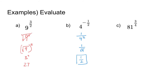What about 81 to the 3 fourths power? This would be the fourth root of 81, and then we're going to take that result and raise it to the 3rd power. I think it's easier to do it that way because the other way would require the fourth root of 81 to the 3rd power, and 81 to the 3rd power is 531,441 — I can't do that in my head. But I do know my fourth roots, and the fourth root of 81 is in fact 3. So this really becomes 3 to the 3rd power, which is in fact 27.